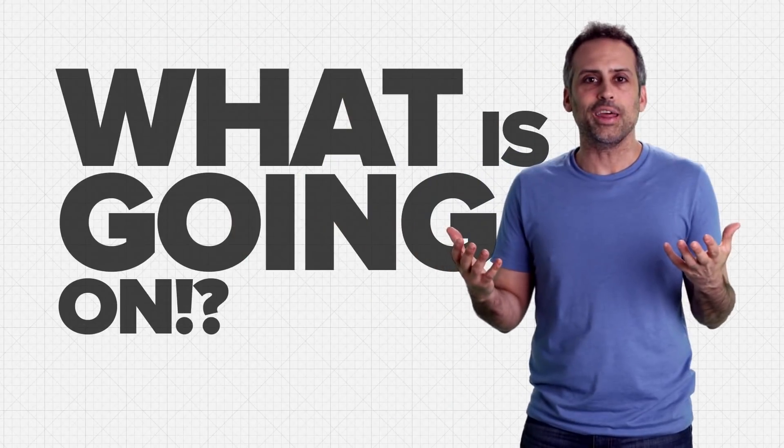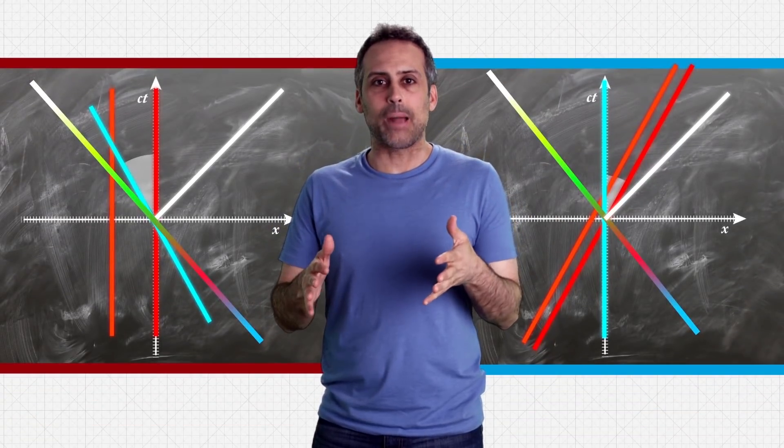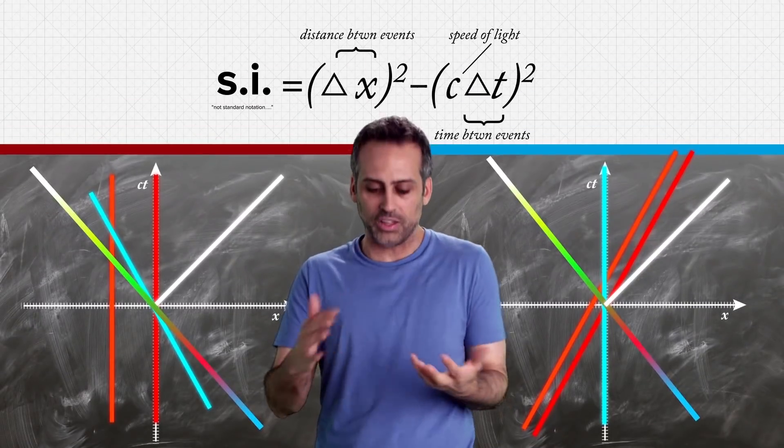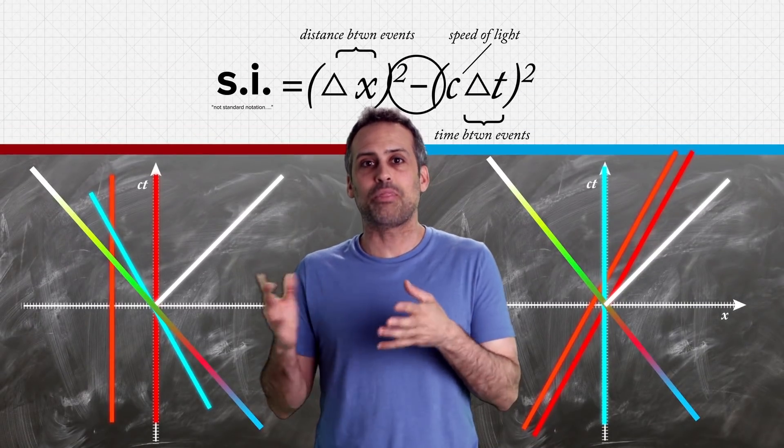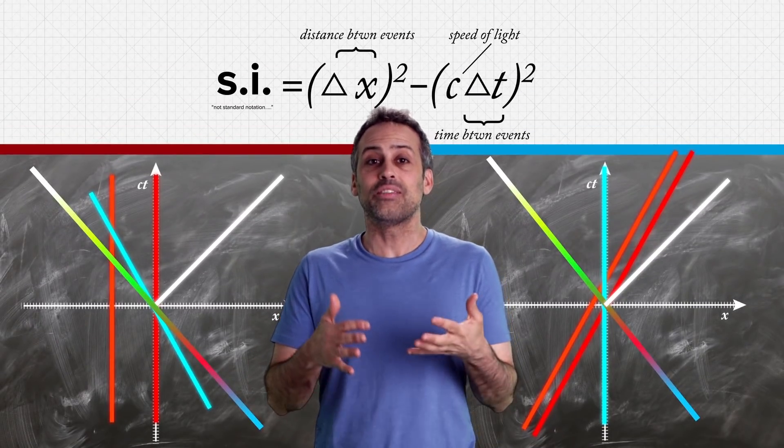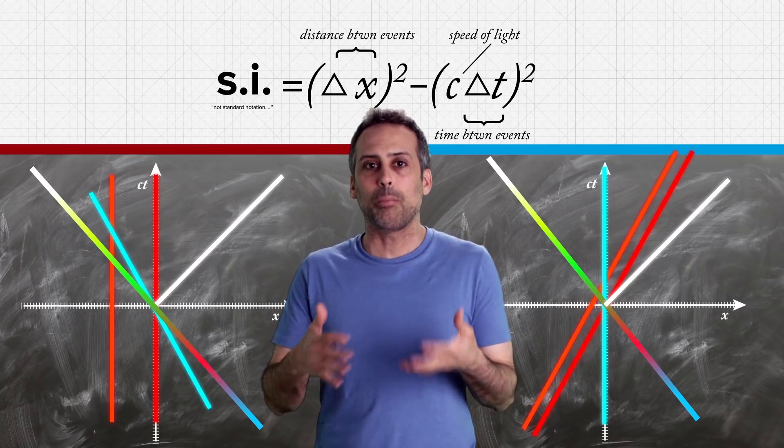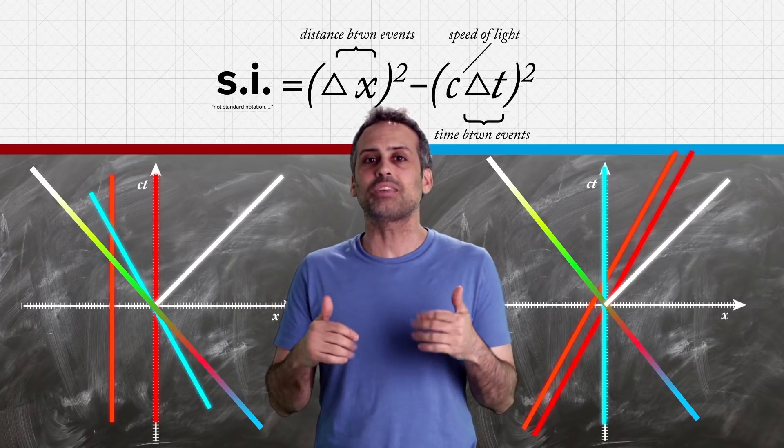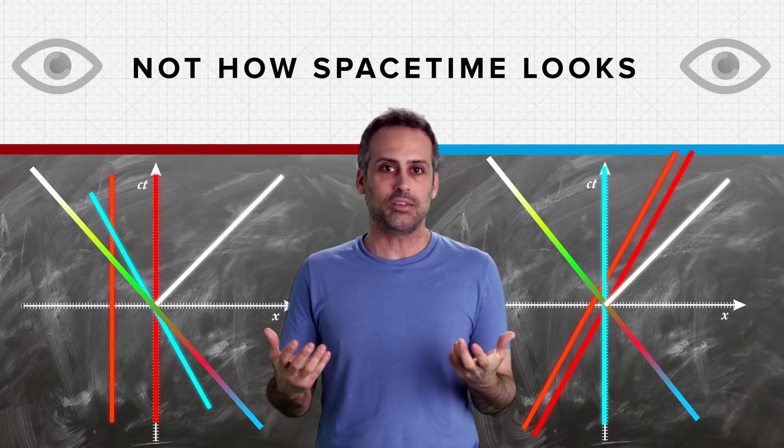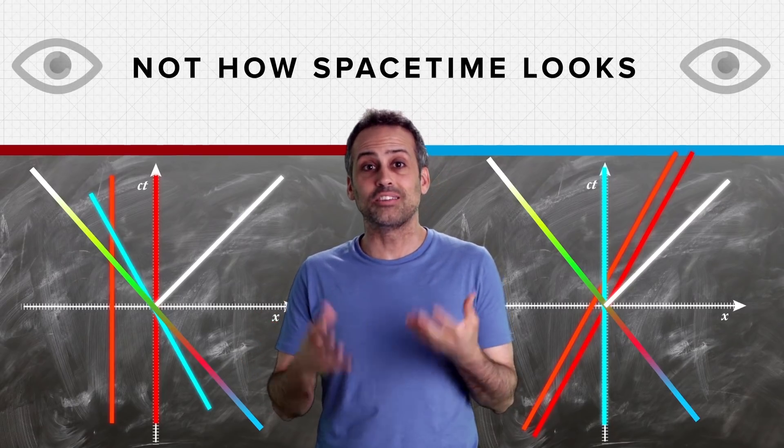So what's going on? Well, spacetime diagrams preserve the spacetime interval between points with its weird minus sign, not the Pythagorean Euclidean notion of distance that seems to be hardwired into our eyes and brain. So while these diagrams help quasi visualize things, spacetime doesn't really look like this. Now that's not surprising, but it is disorienting since we rely so much on our eyes.